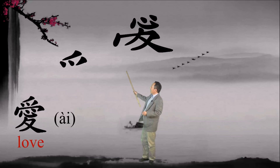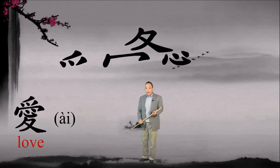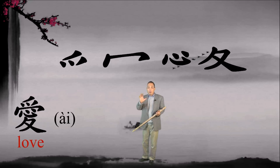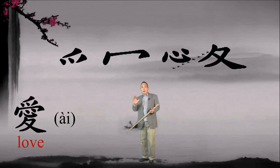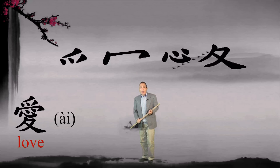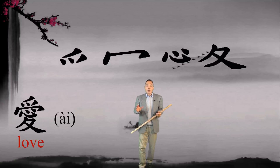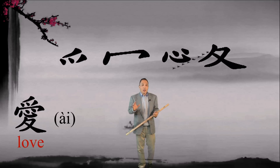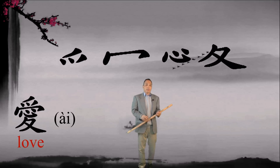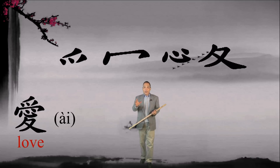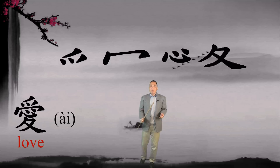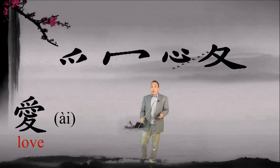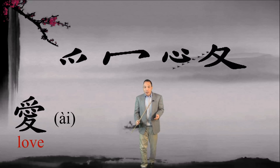This Chinese character, 爱, has four parts, and each part is a picture, and each picture represents a symbolic meaning or meanings. Remember, Chinese characters are pictographic or ideographic.